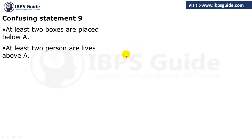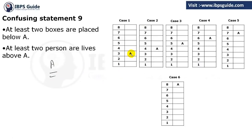The ninth statement: at least 2 boxes are placed below A — same as the previous one but referring to below. Below A, there must be at least 2 and maximum can be anything. If A is on the 3rd floor, there are only 2 below. If A is on the 4th, there are 3 below. A cannot be on the 2nd floor because if A is on the 2nd floor, there is only 1 person below — that is not possible since they are saying at least 2. Minimum 2 must be below A.